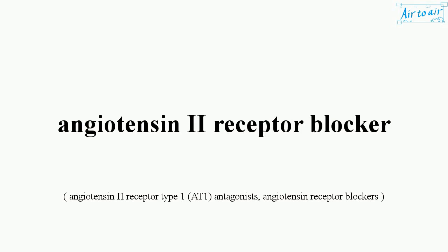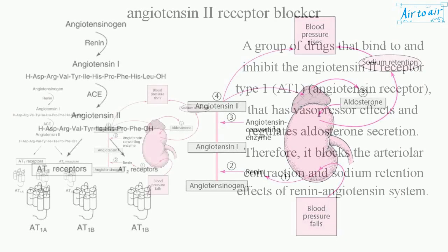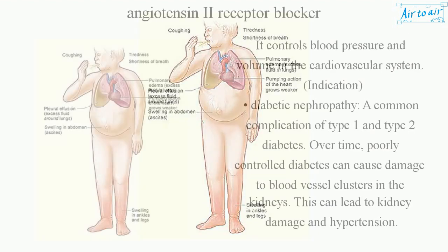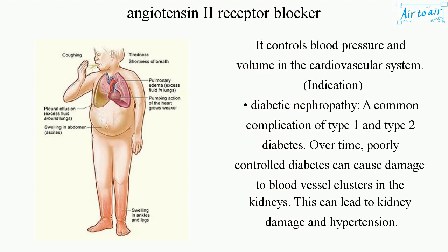Angiotensin II receptor blocker. A group of drugs that bind to and inhibit the angiotensin II receptor type 1 (AT1) angiotensin receptor, that has vasopressor effects and regulates aldosterone secretion. Therefore, it blocks the arteriolar contraction and sodium retention effects of the renin-angiotensin system. It controls blood pressure and volume in the cardiovascular system.